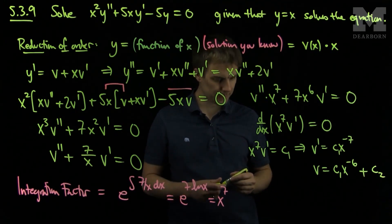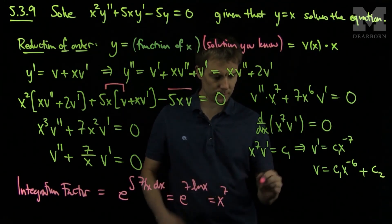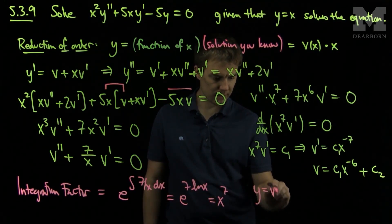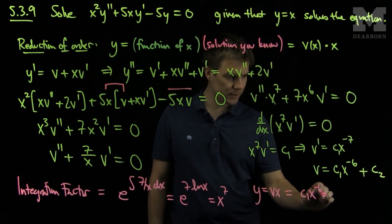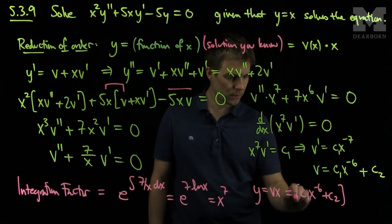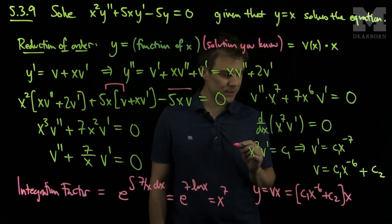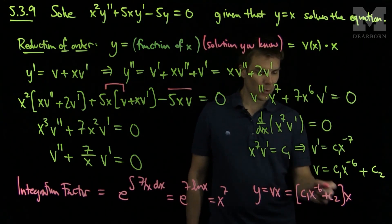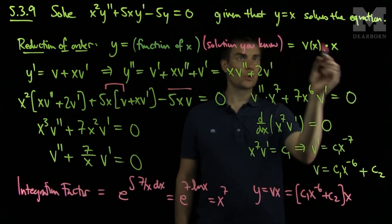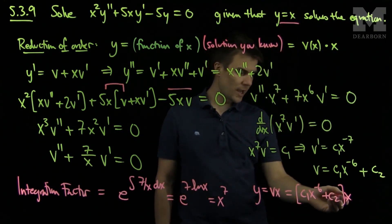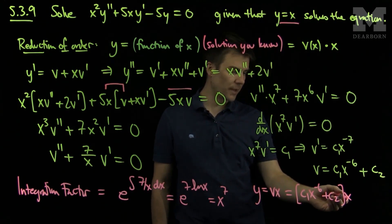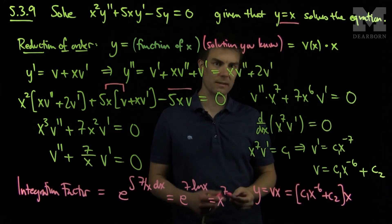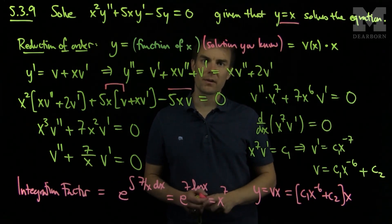Now we plug this back into the original formula. Our solution is y equals v times x. Since v is c1 x to the negative 6 plus c2, we get y equals c1 x to the negative 5 plus c2 x. We can see that c2 x recovers our original solution, and the additional independent solution is x to the negative 5th power. Thank you very much.